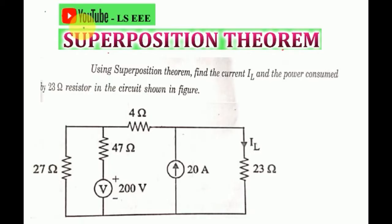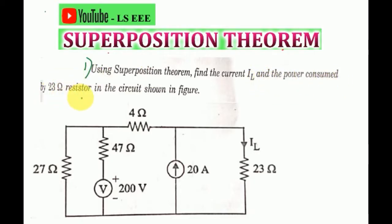Welcome to LSEE YouTube channel. This is Livingston here. Topic: Superposition Theorem, Question No. 1. Using Superposition Theorem, find the current IL and power consumed by the 23 Ohm resistor in the circuit shown in the figure.